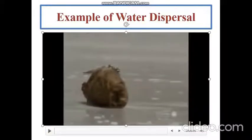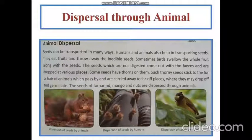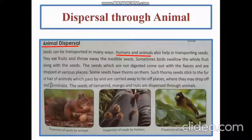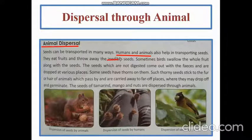Now we will look at dispersal through animals. Seeds can be transported in many ways — humans and animals also help in transporting seeds, so we are also agents of dispersal. Animals eat fruit and throw away the inedible seeds. Inedible means the parts we don't eat — when we eat a fruit, we eat the edible parts and throw away the seeds, so the seeds become inedible.